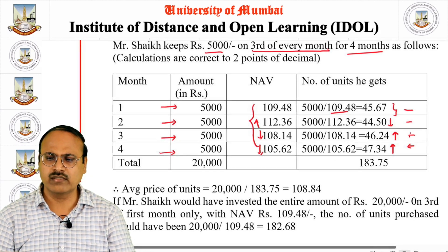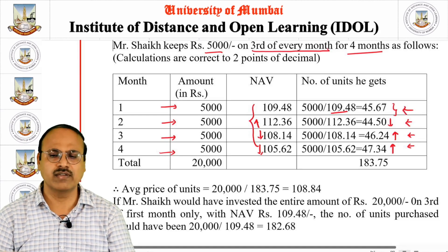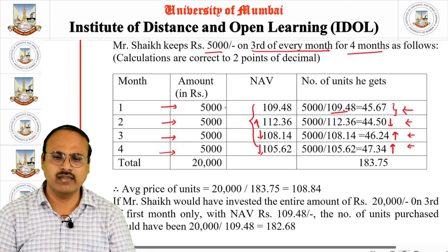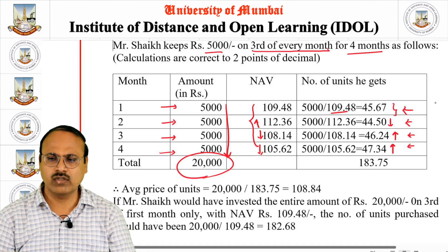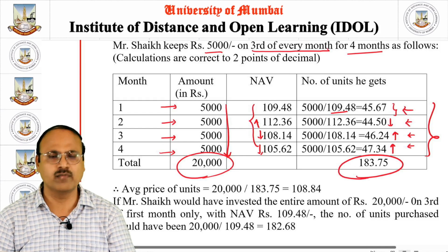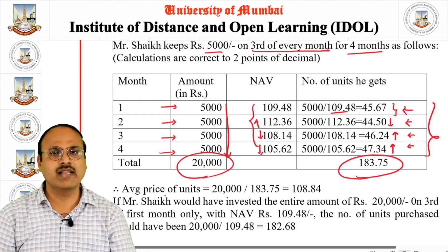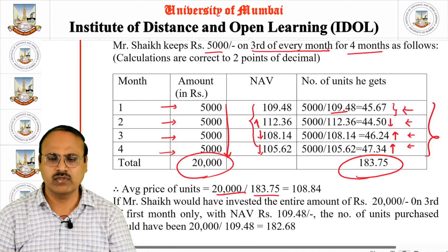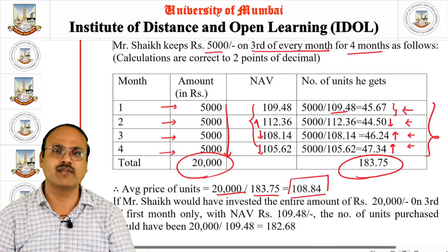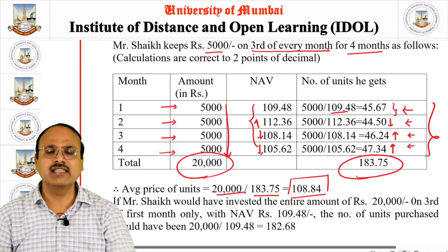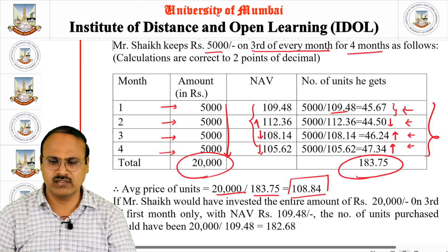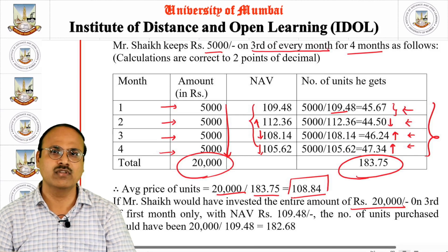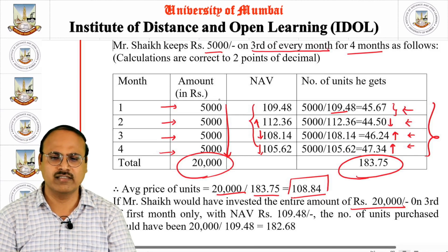Cumulatively, the total investment over four months is ₹20,000 and the total number of units purchased is 183.75. The average price is calculated as total investment divided by total units: 20,000 ÷ 183.75 = ₹108.84. Now, if Mr. Sheikh had invested the entire ₹20,000 as a lump sum on the 3rd of the first month instead of ₹5000 per month, the NAV then was ₹109.48.